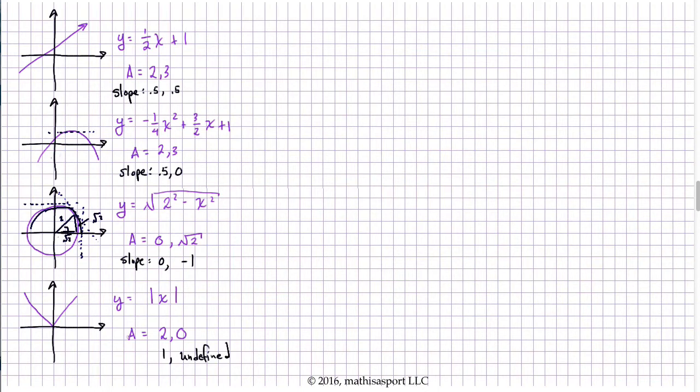Now this last one I think is particularly interesting, where we're working with the absolute value of x. So when we picked a point out here, let's call that the A equals 2, or in other words x equals 2 point, it should come as no surprise that we got a slope of 1. Correspondingly, if we had chosen an x equals negative something point, we would get a slope of negative 1. What's interesting is what happens when we choose 0.